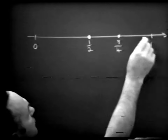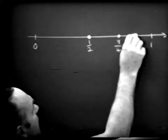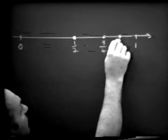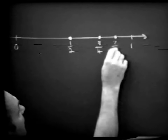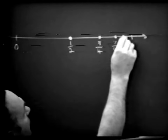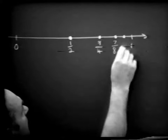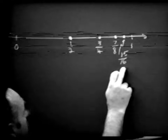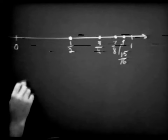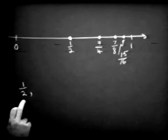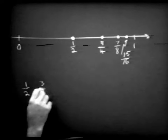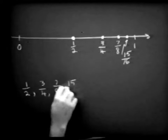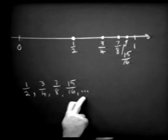And then between these two points, let me select another point, and associated with that point is the number — and I think you would agree — 7/8. And then associated with this next point is the number 15/16, and I think that's far enough. Now let's write down some of these terms of this sequence: one-half, three-fourths, seven-eighths, 15/16, and so on.